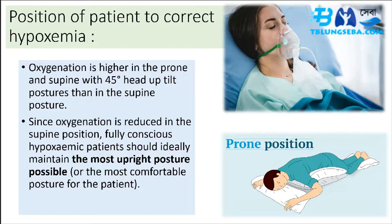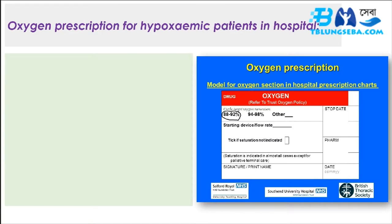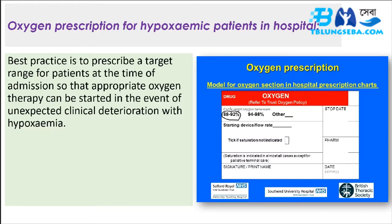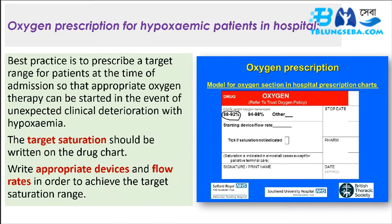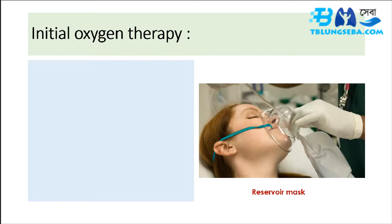Oxygen prescription for hypoxemic patients in hospital — best practices: prescribe a target range for patients at the time of admission so that appropriate oxygen therapy can be started in the event of unexpected clinical deterioration with hypoxemia. The target saturation should be written on the drug chart, with appropriate devices and flow rates to achieve the target saturation range.